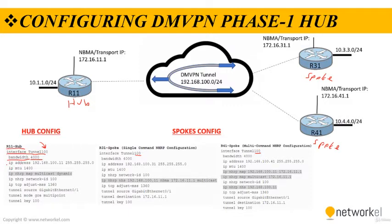We are assigning an IP address to our tunnel interface — 100.11. This will be our tunnel interface configured for the hub. Then we are modifying the MTU and the MSS values. We can also define an NHRP network ID, which is set to 100 in this case.